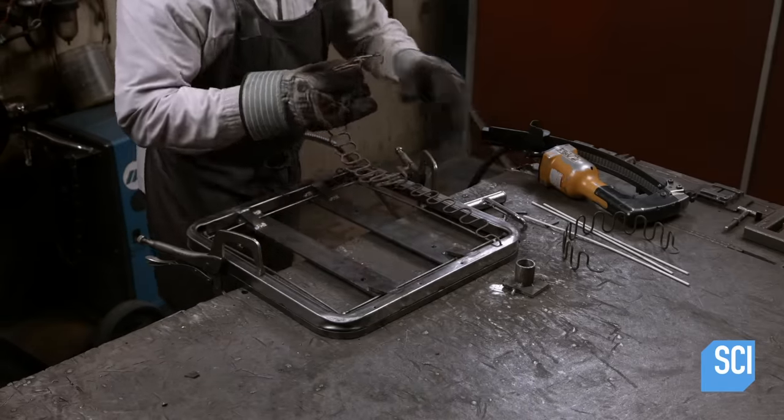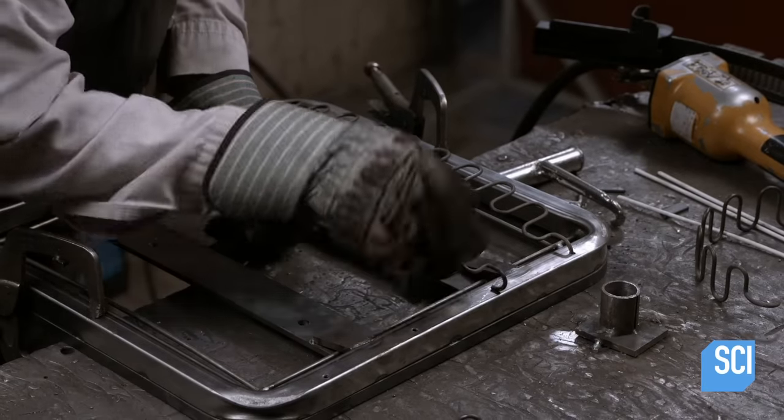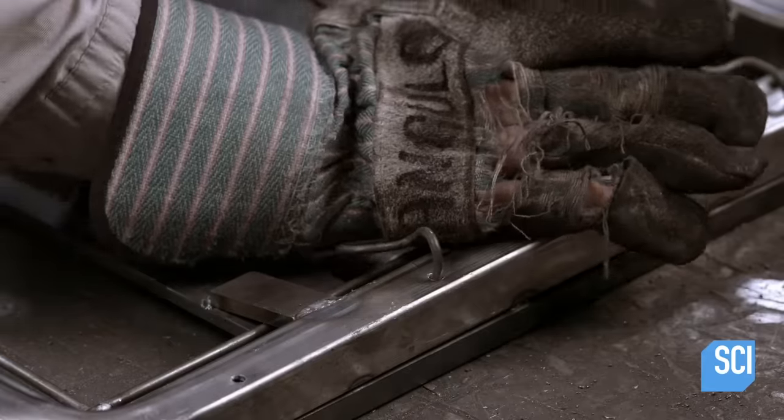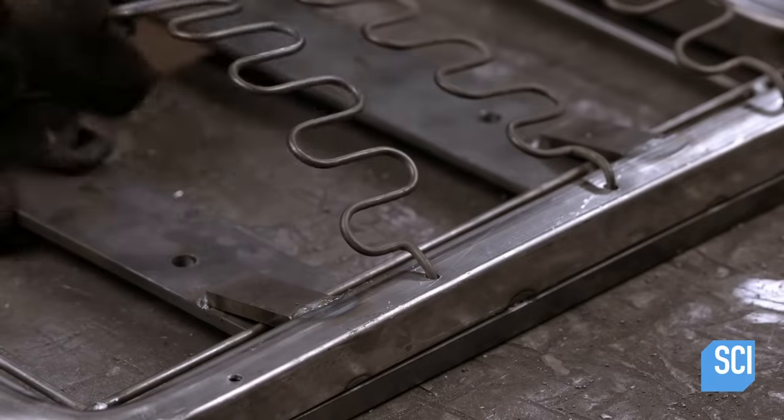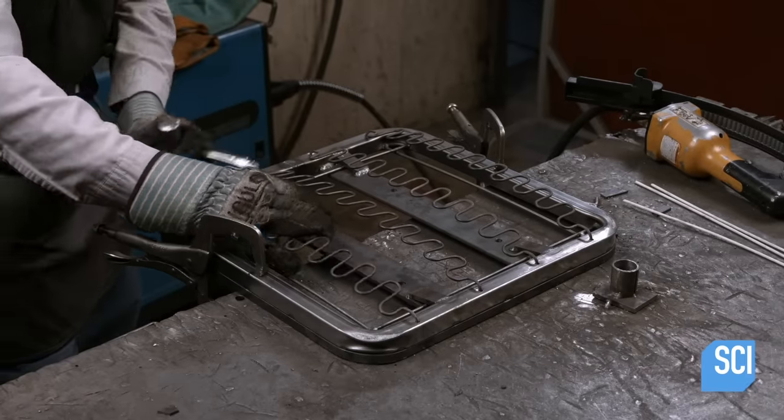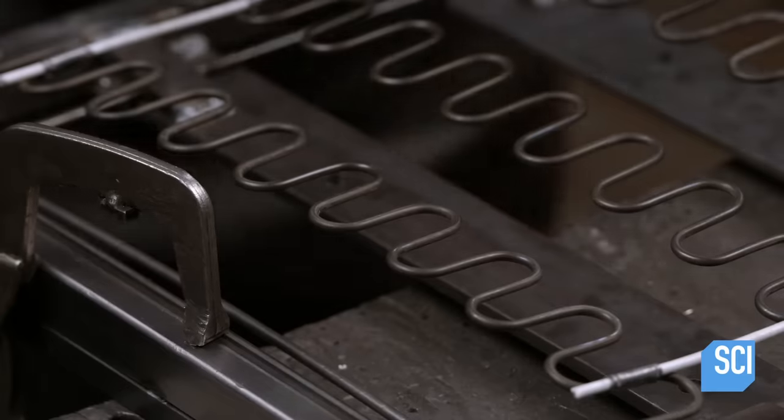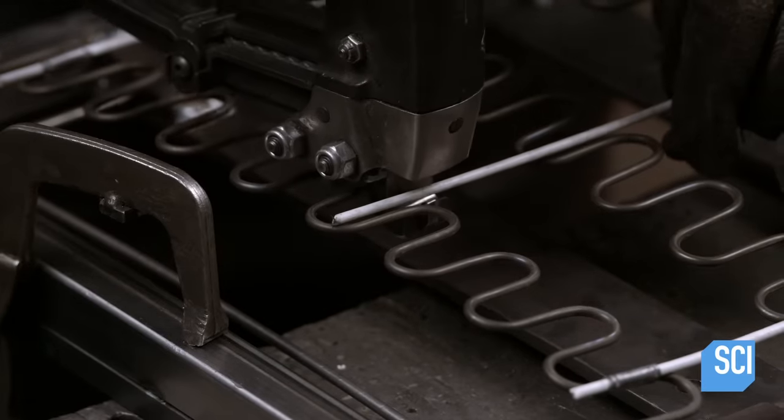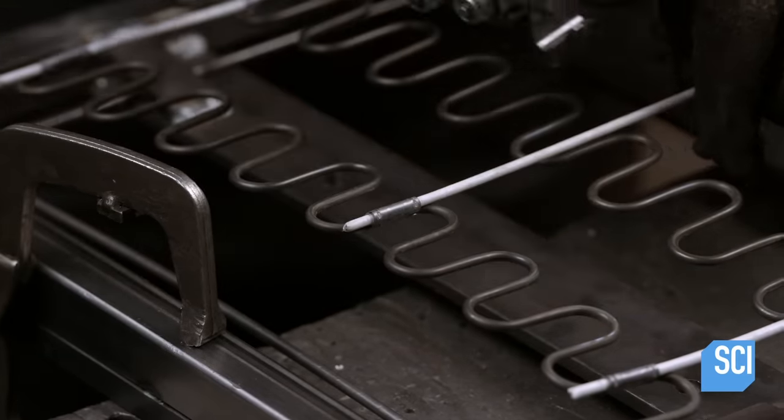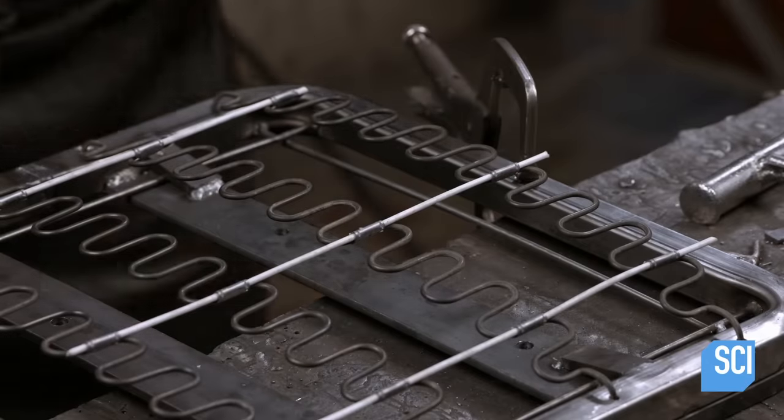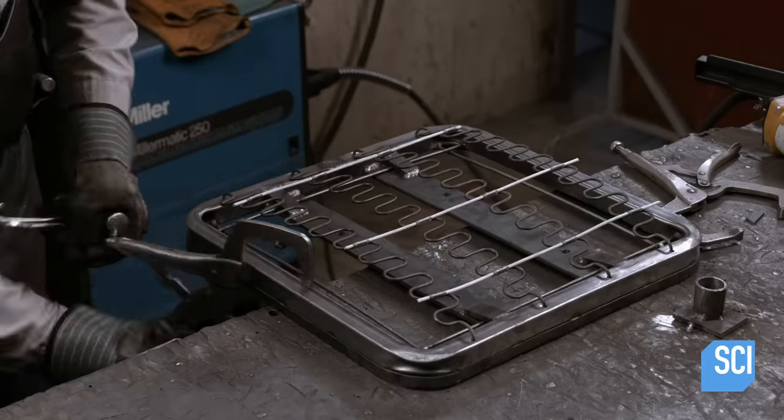He hooks S-shaped steel springs from the front to the back of the seat frame. These sinuous springs will eventually provide a flexible web of suspension in the seat. He positions the rods laterally and clips them to the springs for additional stability and support. The office chair seat frame is now complete.